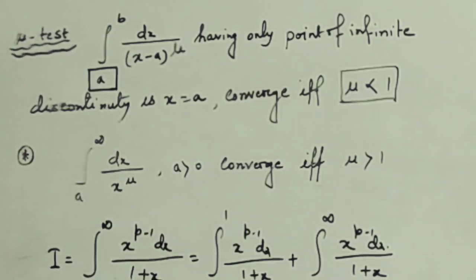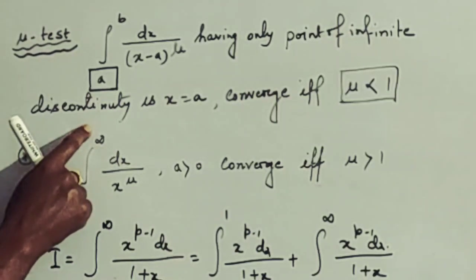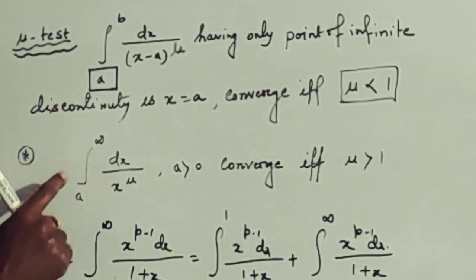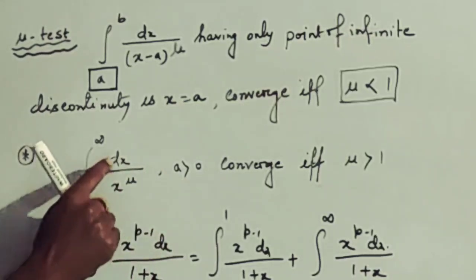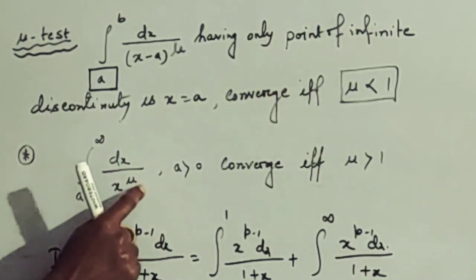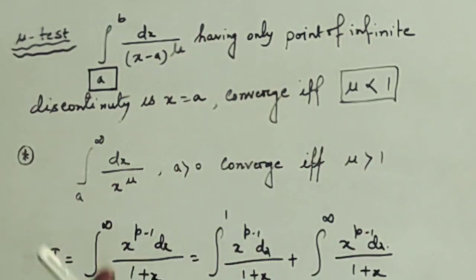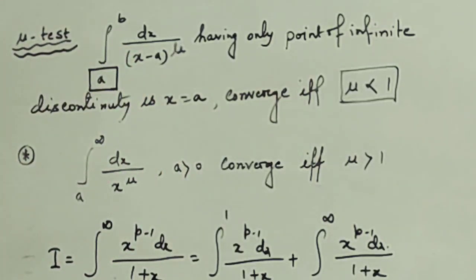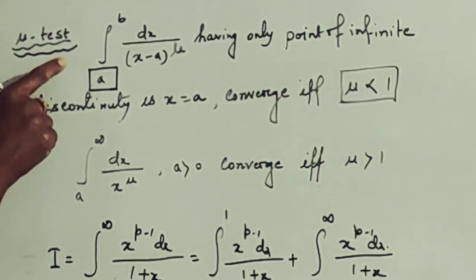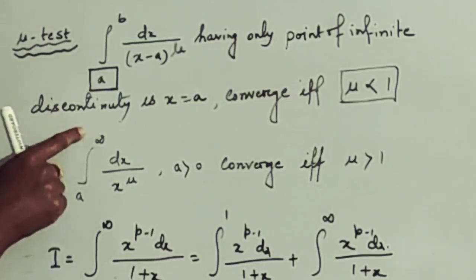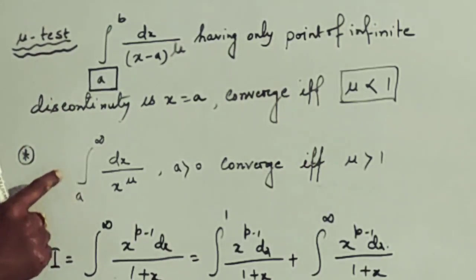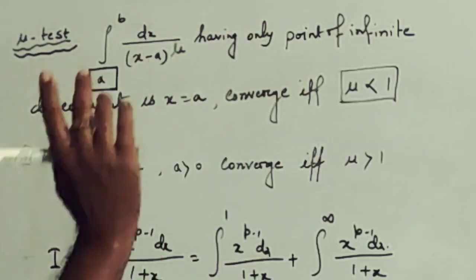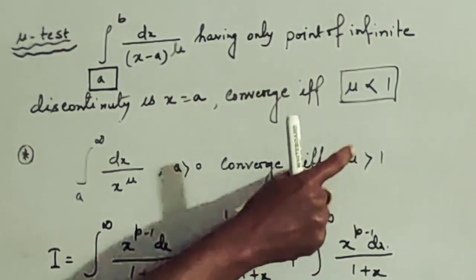The second test is used for integrations of the form from a to infinity, where a must be greater than 0. The integration from a to infinity of dx by x to the power mu is convergent only if mu is greater than 1. These two tests look similar but are different: the first has a finite upper limit and converges if mu less than 1, while the second has an infinite upper limit and converges if mu greater than 1.